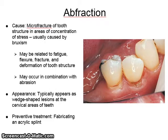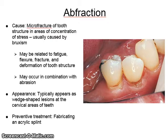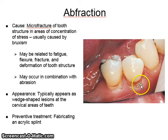Abfraction is the microfracture of tooth structure in areas of concentration of stress, usually caused by bruxism. They may be related to fatigue, flexure, fracture, and deformation of tooth structure. They may also occur in combination with abrasion. The appearance is typically a wedge-shaped lesion at the cervical areas of teeth. The preventive treatment is fabrication of an acrylic splint or adjustment of the bite. In the image on the right, you can see an abfraction lesion in conjunction with an abrasion lesion.